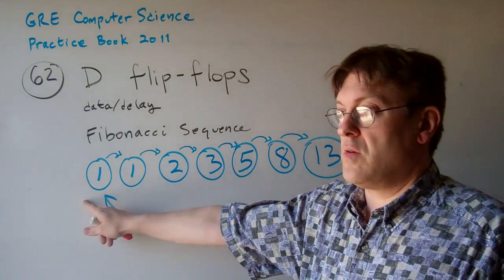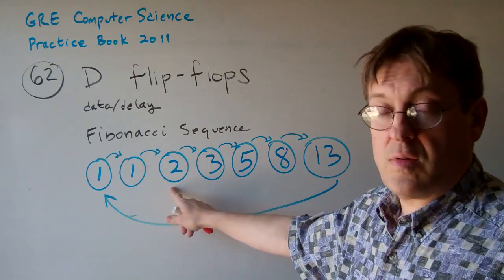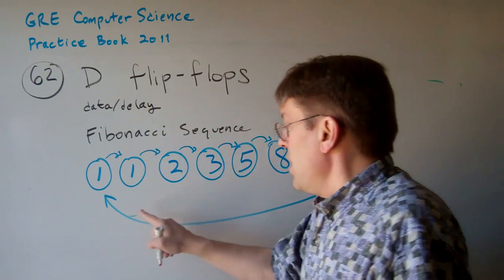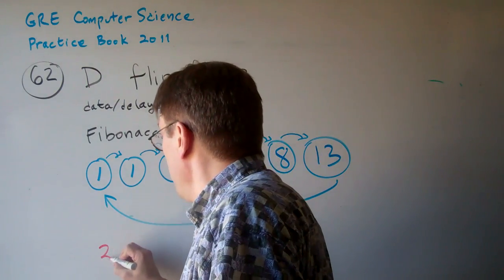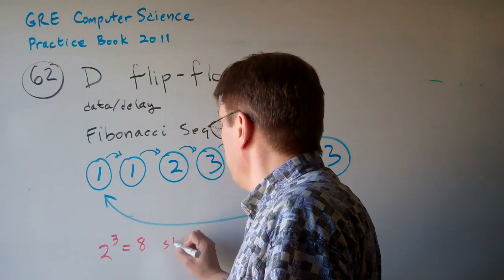You can call this state 0, 0, 0, and call this state 0, 0, 1, this state 0, 1, 0, and so forth. So we have 7, and so we're going to need 2 to the 3 equals 8 states.